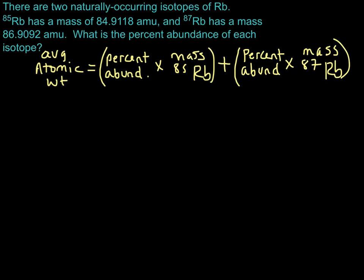Let's do an example where we have the isotopic masses for two different isotopes, and we are looking for the percent abundance of those. And we're not explicitly given any other information in the table.